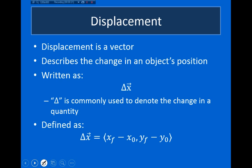I want to start off with some basic definitions. Displacement is a vector that describes the change in an object's position. We talk about the change in an object's position because the laws of physics are the same everywhere. For example, if I drop a ball off the roof of Western Albemarle, it will fall to the ground in the exact same way as if I dropped it off any other building. So the exact position of the object doesn't matter so much — it's the change in position that we're describing, because that's something general that's the same everywhere.